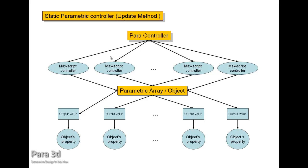Once you press the update button, Para3D starts evaluating each of the max controllers and then updates the object property according to the result. In this case you always need Para3D installed on your machine because without Para3D these max script controllers cannot be evaluated.